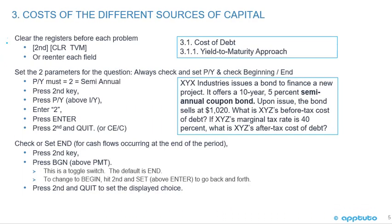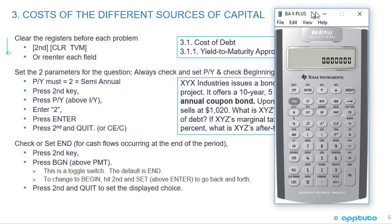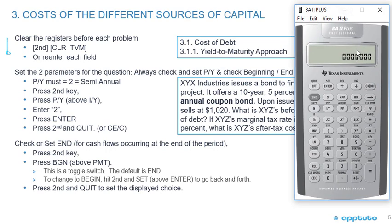This slide gives some more calculator tips. First, clear the time value of money data — you can do second, then clear TVM above the future value key — or just make sure you re-enter every field. Second, always check and set the two parameters for the question: check P/Y and check your beginning/end mode. You may have done an annuity due question and left the calculator in beginning mode, so always check second P/Y for periods per year and verify you're in end mode.